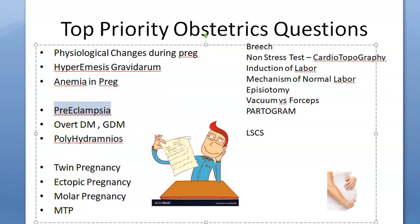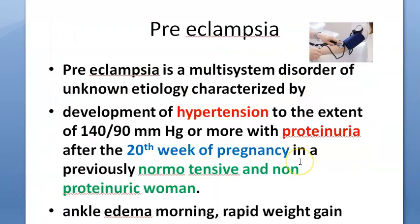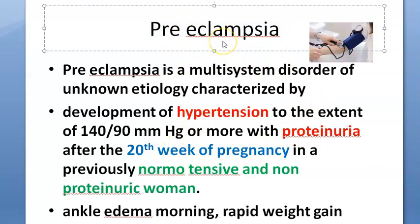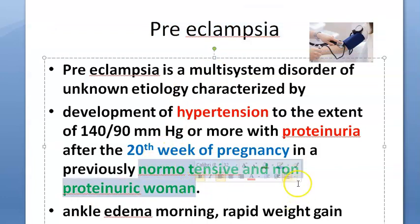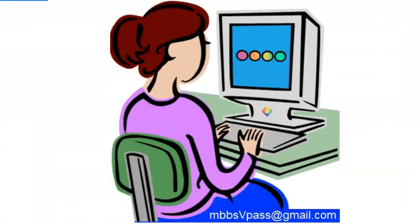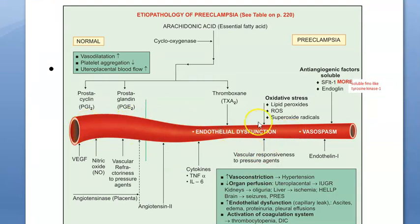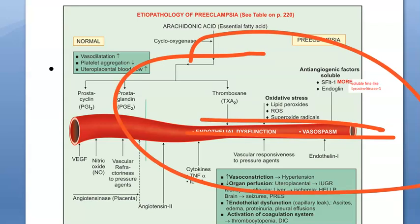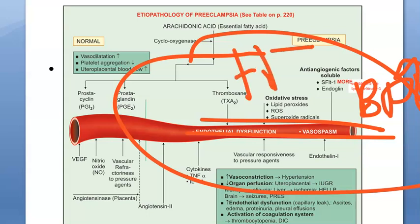Now let's move on to preeclampsia. When hypertension is combined with proteinuria it becomes preeclampsia; when seizures are added it becomes eclampsia. Preeclampsia is the term used only when it occurs in a previously normotensive, non-proteinuric woman due to pregnancy. If she already had hypertension, it is called superimposed preeclampsia. In normal pregnancy, vasodilation occurs, but in this woman vasospasm occurs — blood pressure rises instead of dropping.